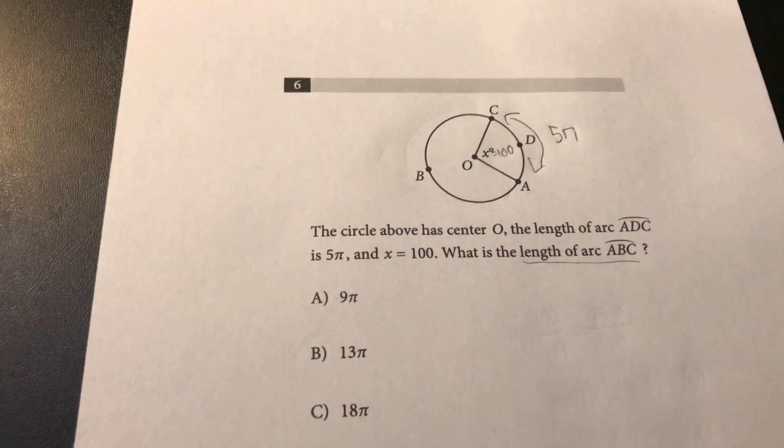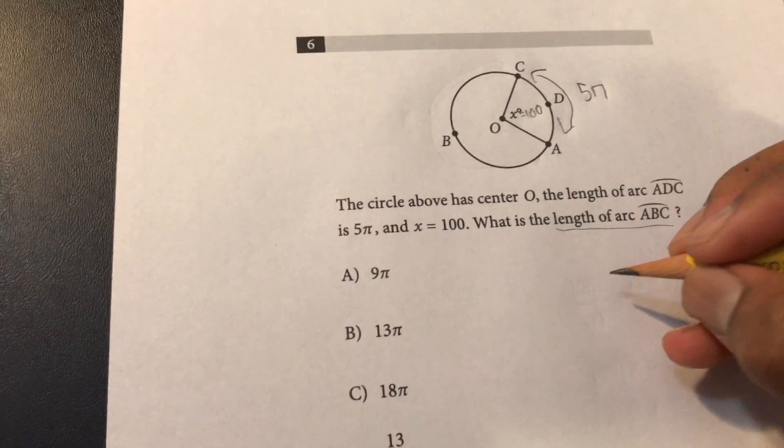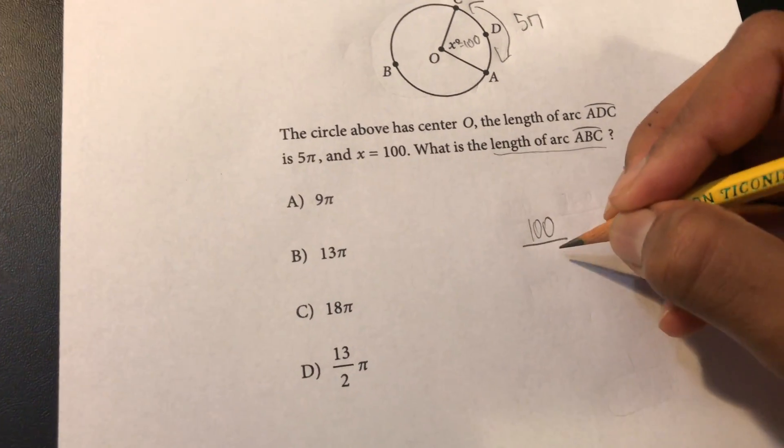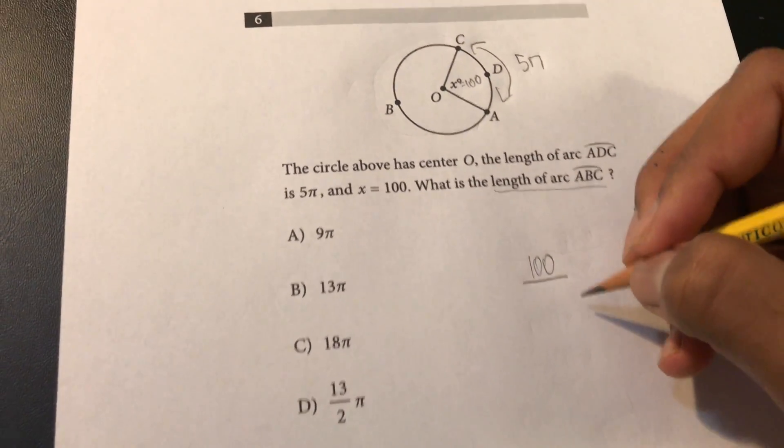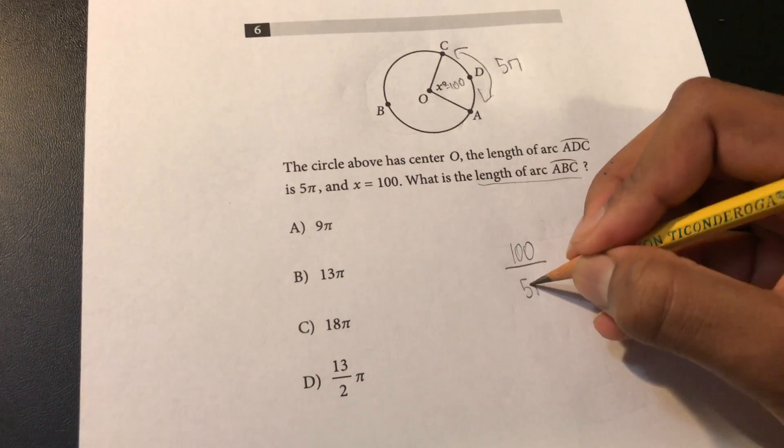So now we have our first ratio already, so for now I'm just going to correspond, I'm just going to say that x corresponds with the arc ADC so 100 over 5π is going to be our first ratio.